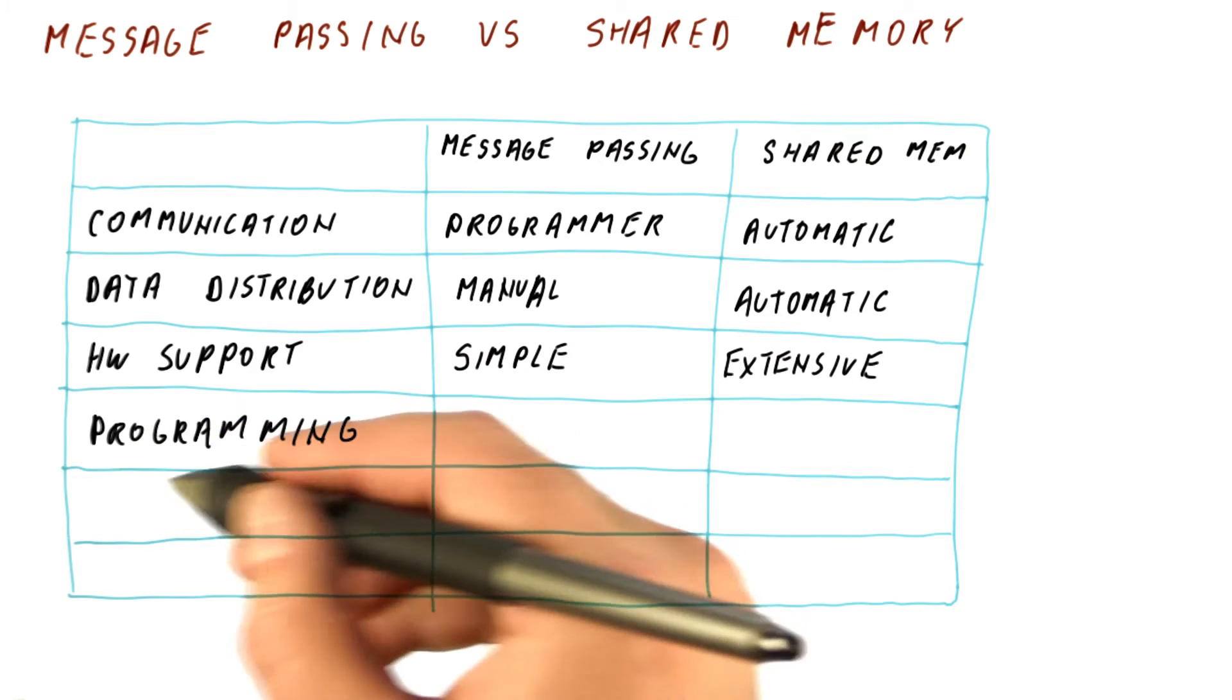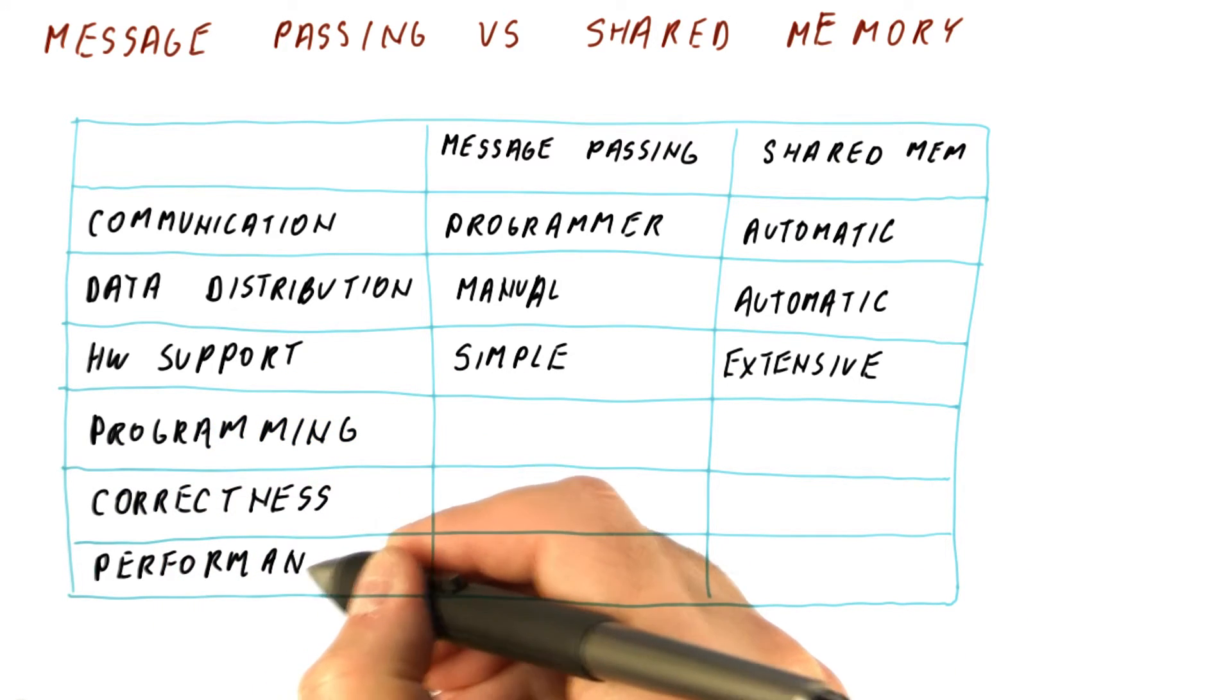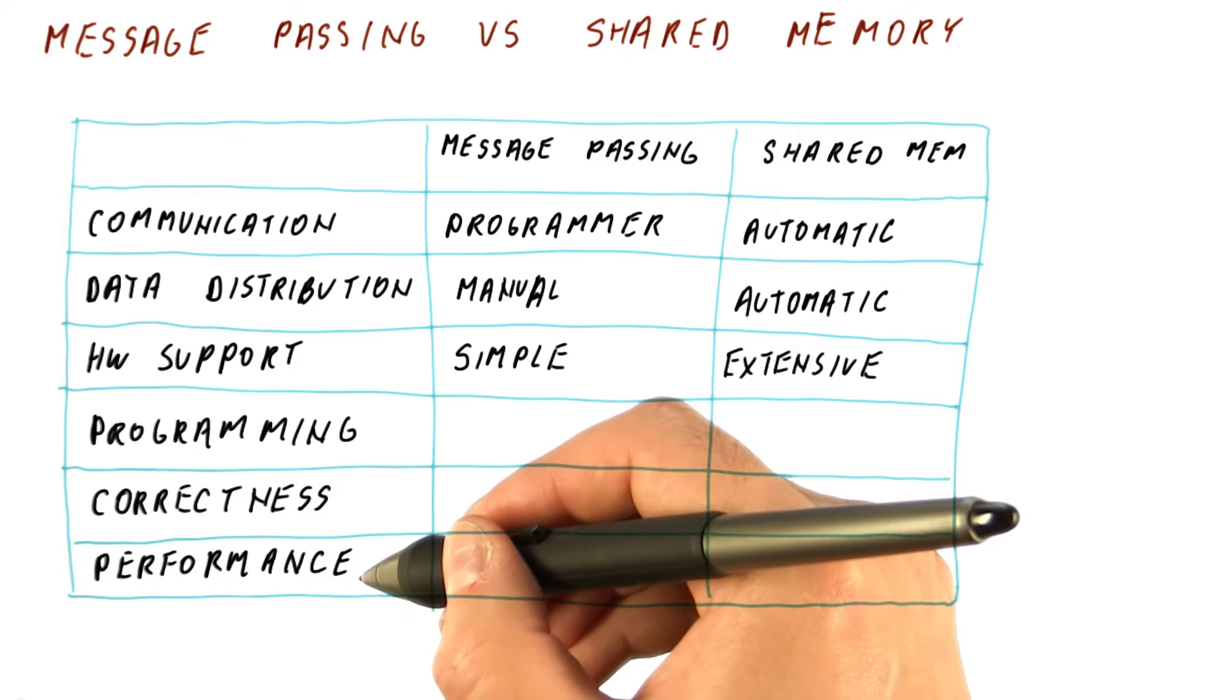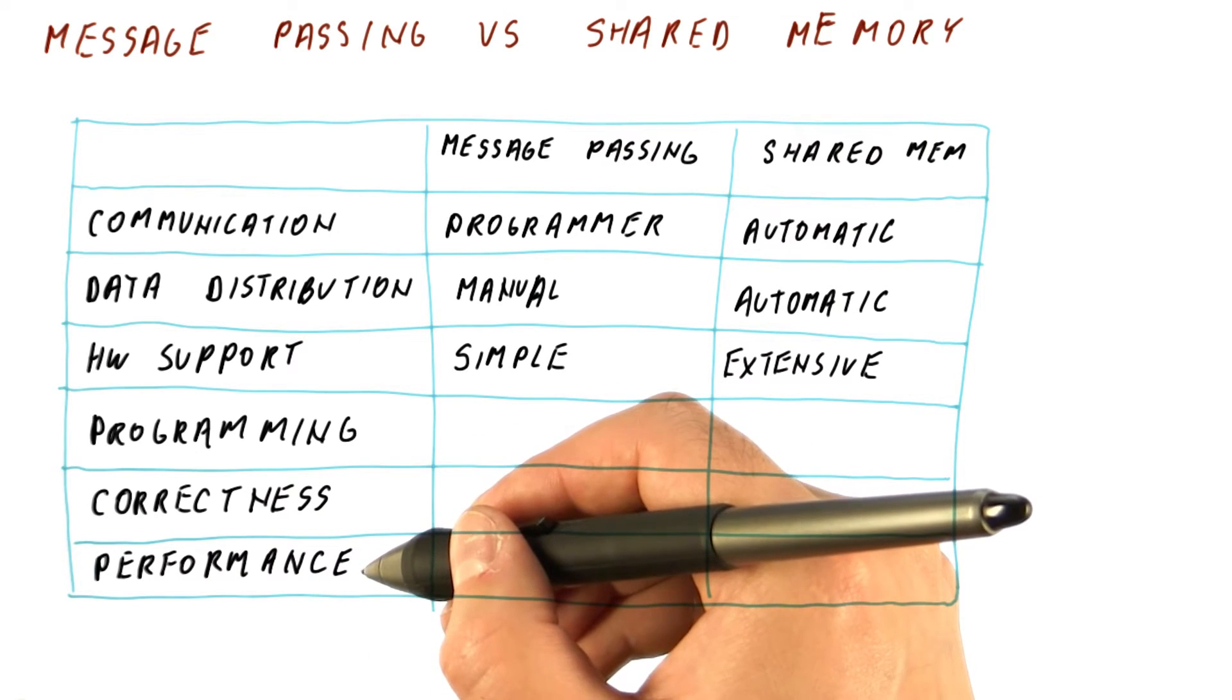So as far as the programmer is concerned, the programmer worries about two things: correctness and performance of their program. They want their program to be correct and do as well as possible on the available cores.